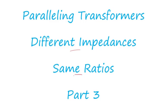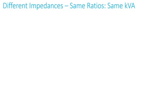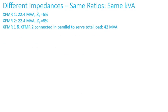In Example 1, both transformers have the same KVA or MVA. Transformer one is 22.4 MVA with six percent impedance, transformer two is 22.4 MVA with eight percent impedance. Transformer one and two are connected in parallel and they're serving a load of 42 MVA.